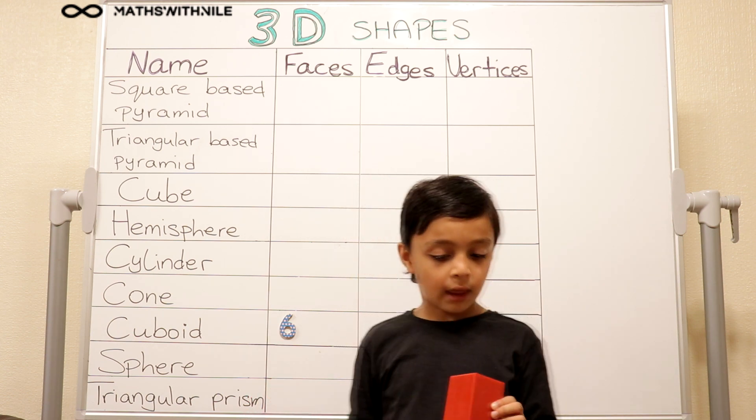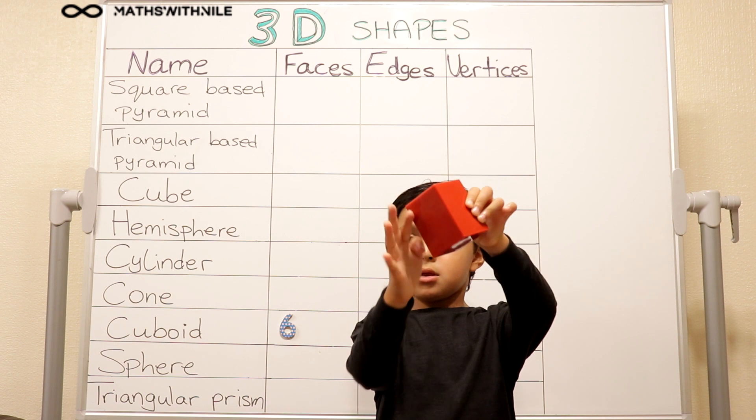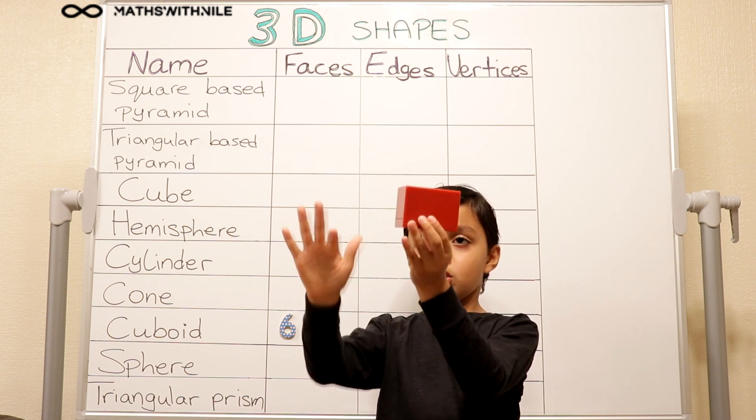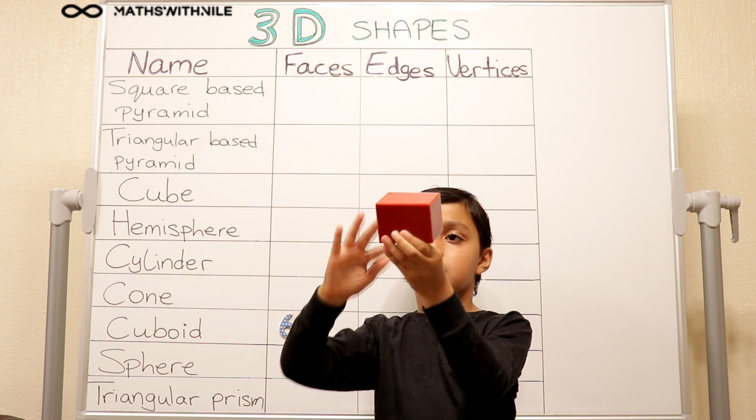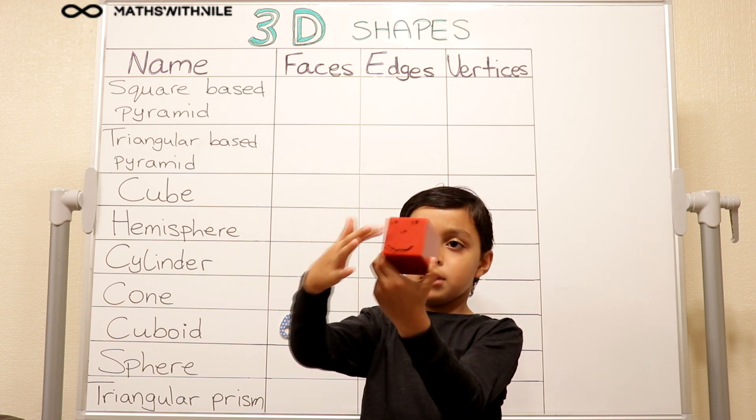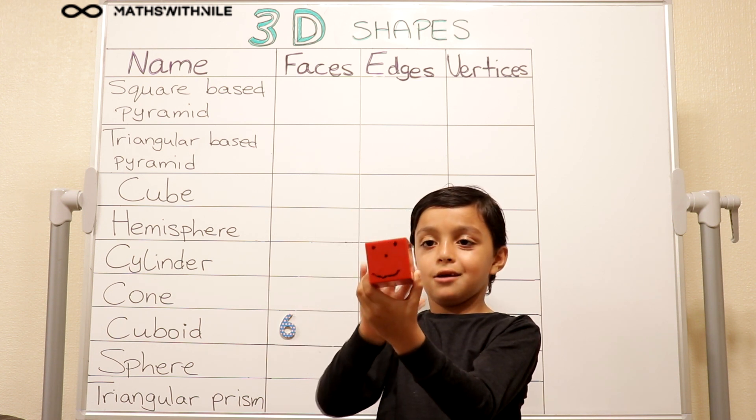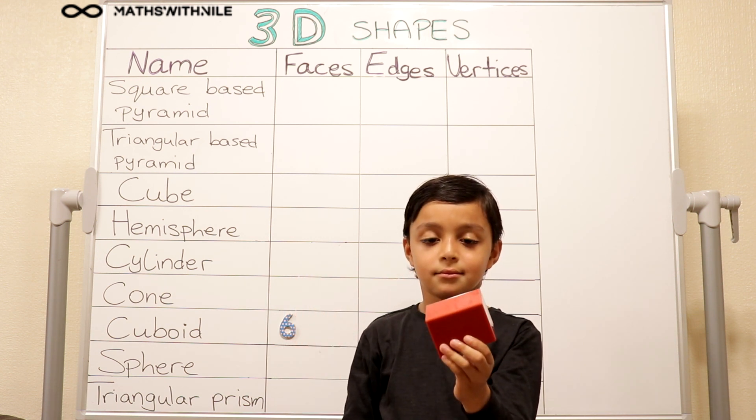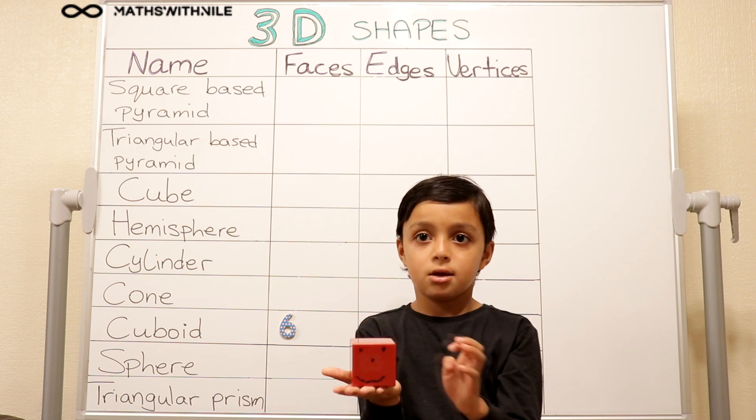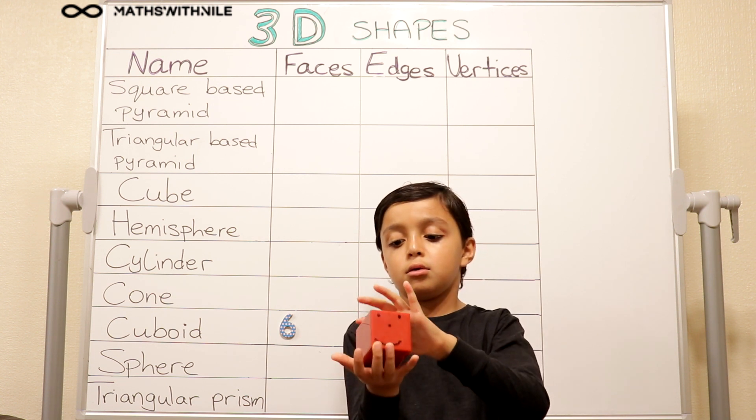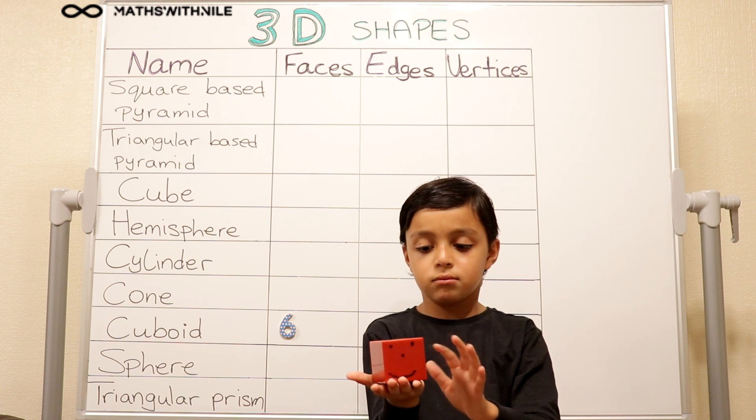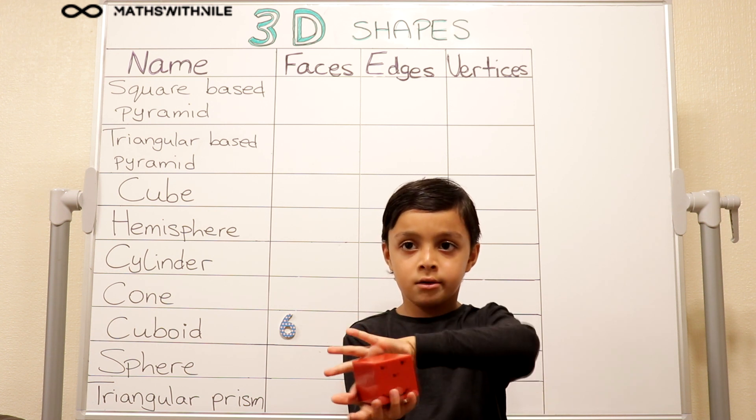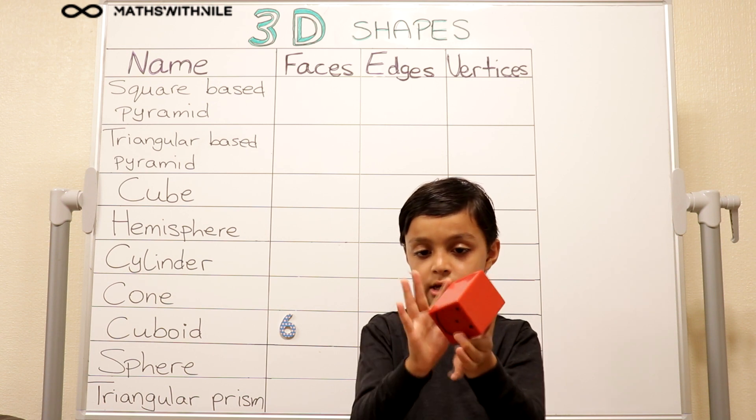And what are edges, Niall? Edges are these parts where the faces meet. So can you hold the cuboid and count how many edges it has? One, two, three, four, five, six, seven, eight, nine, ten, eleven, twelve. Can you count that again because it looked really confusing for us. Can you count the four on top going around first? One, two, three, four. And can you count the four coming down the side? Five, six, seven, eight. And then at the bottom? Nine, ten, eleven, twelve.